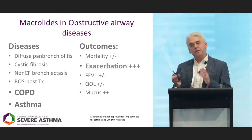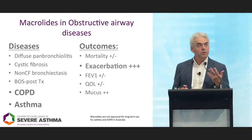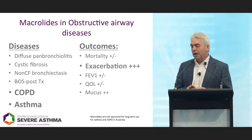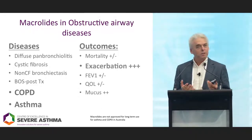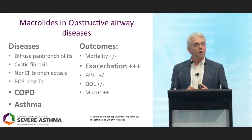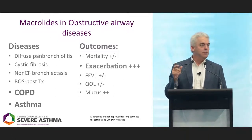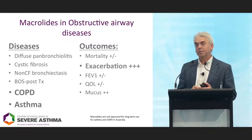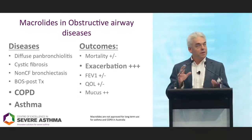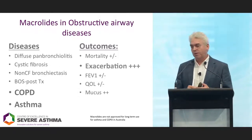What benefits do macrolides give to patients? Looking at the list, exacerbations is really where the benefit is. There are modest and inconsistent effects on lung function, and modest effects on quality of life. Yet these are the two measures that traditionally we've used to assess drug efficacy in asthma and COPD. So you have to shift focus to exacerbations to be able to measure the benefits of these drugs.